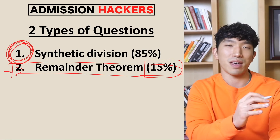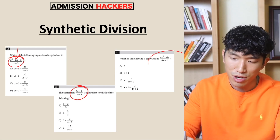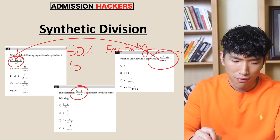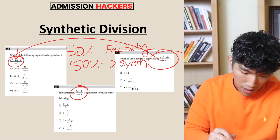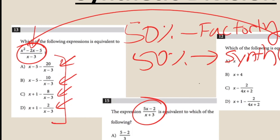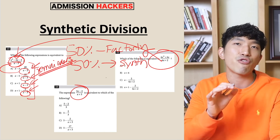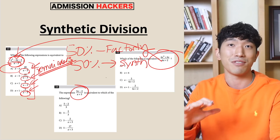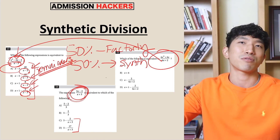Now that we know what types of questions are tested, how do we know when to use synthetic division? If you see a polynomial over a polynomial, there's about a 50% chance it's factoring and 50% chance it's synthetic division. But look at the answer choices — if they have these little fractions with a common denominator that comes from the question's original denominator, those are remainders. And if any of the choices have a remainder, there's essentially a 100% chance it's going to be a synthetic division question.